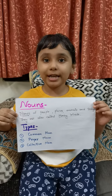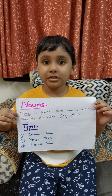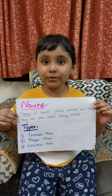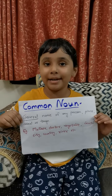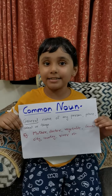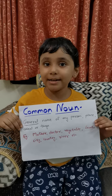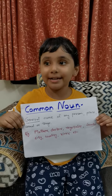I am going to tell about three types of nouns: common noun, collective noun, and proper noun. First, common noun. It is the general name of a person, place, animal or thing.